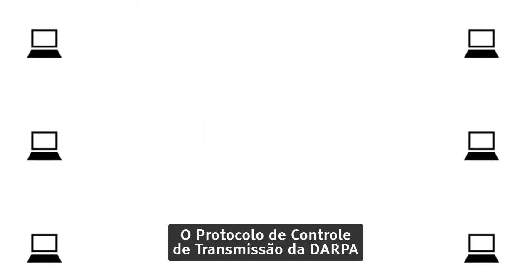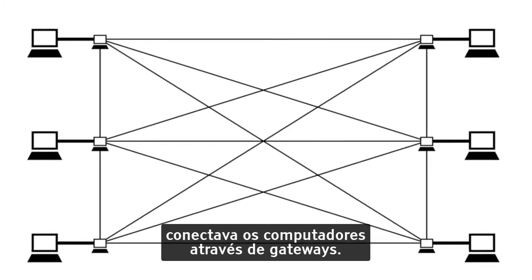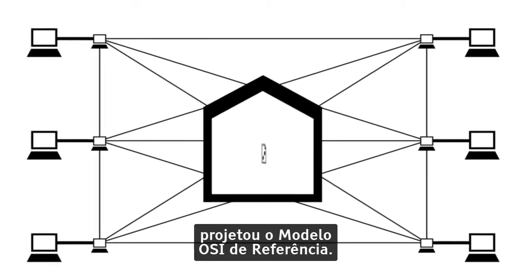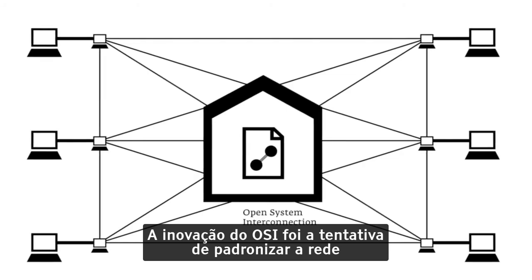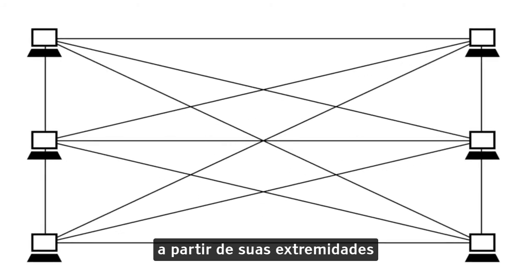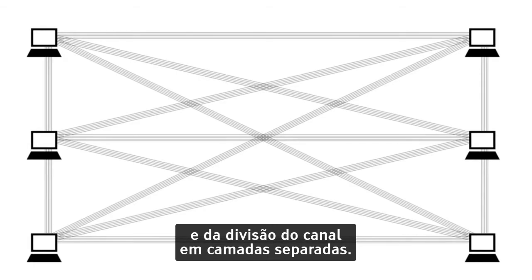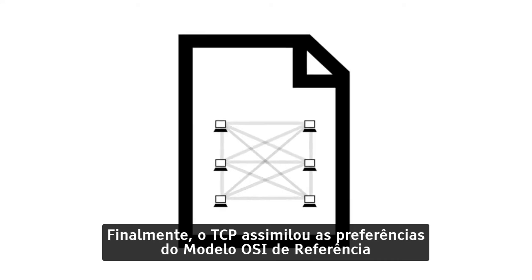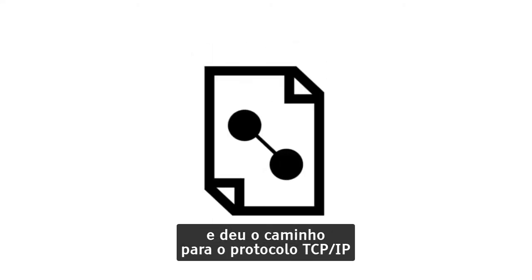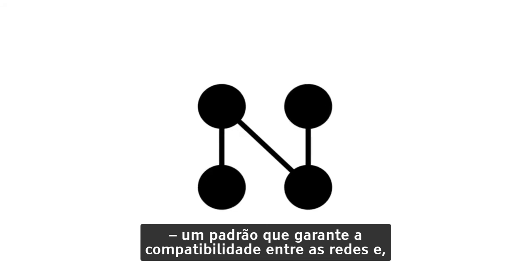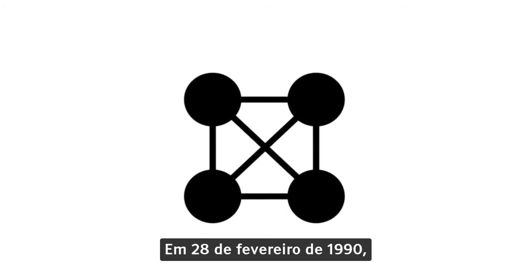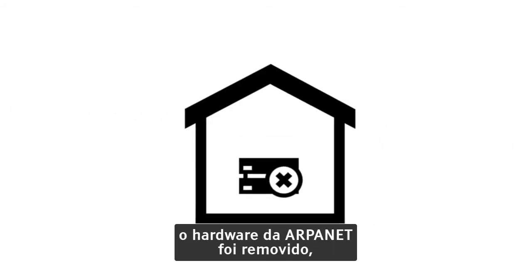DARPA's Transmission Control Protocol was designed to connect computers through gateways, and the International Organization for Standardization designed the OSI reference model. The innovation of OSI was the attempt to standardize the network from its ends and the channel's division into separate layers. Finally, the TCP assimilated the preferences of the OSI reference model and gave way to the TCP/IP protocol — a standard which guaranteed compatibility between networks and finally merged them, creating the internet. By February 28th, 1990, the ARPANET hardware was removed, but the internet was up and running.